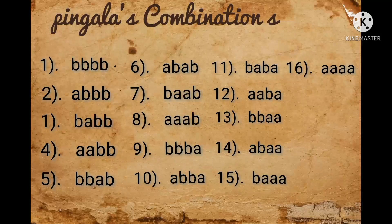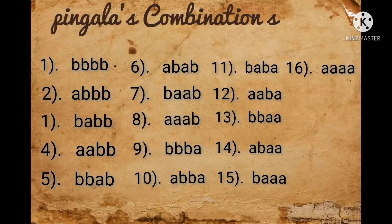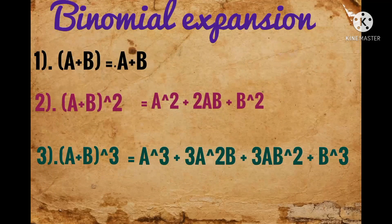That means: first, write down all n number of b's as the first combination. In the next line, replace the first b with an a. At the same line, replace all letters to the left of this new a with b. For the next subsequent line, repeat steps 2 and 3. Continue as above till we arrive at the line with all a's. This can be clearly seen as the binomial expansion (a + b)^n, starting with b^n and ending in a^n.